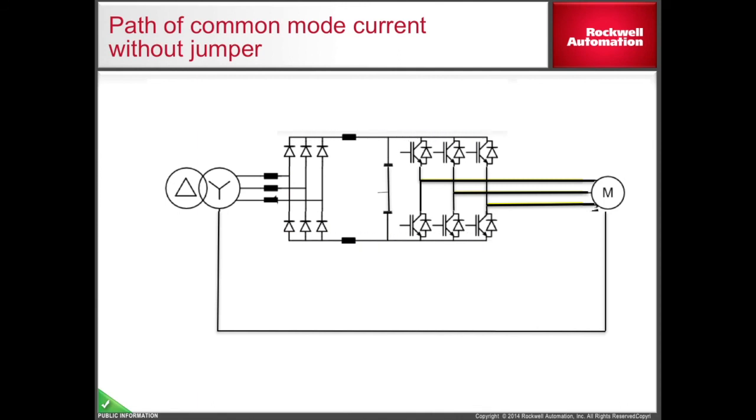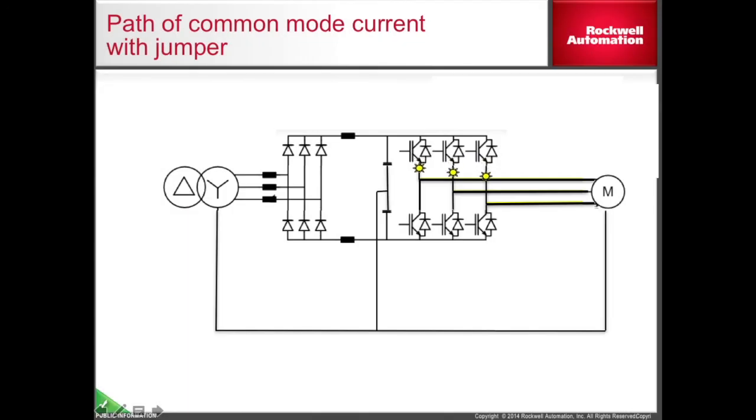In many cases, instrument controlled device signals could be affected by this current. Here, the PEB jumper is installed, providing a controlled path back to the IGBT, limiting the effect common mode current has on other devices in the area.